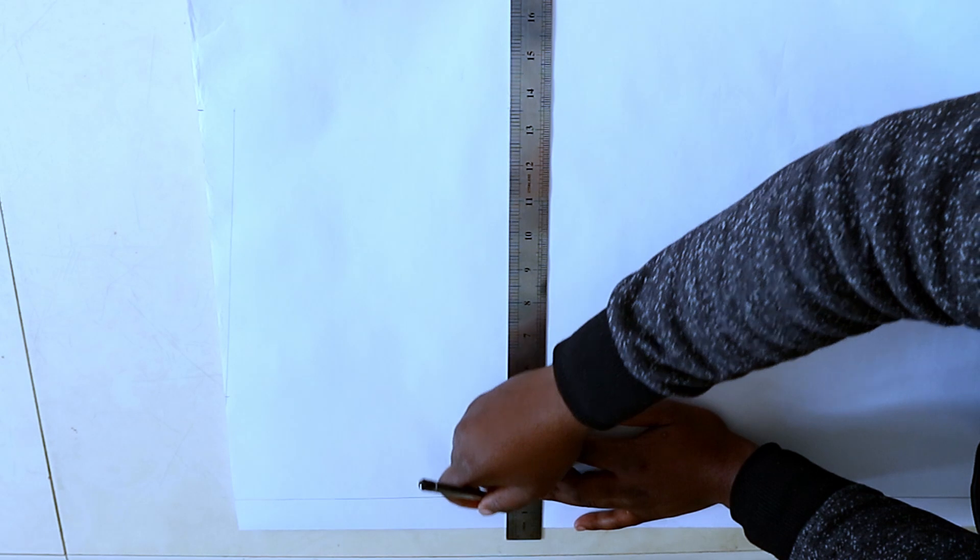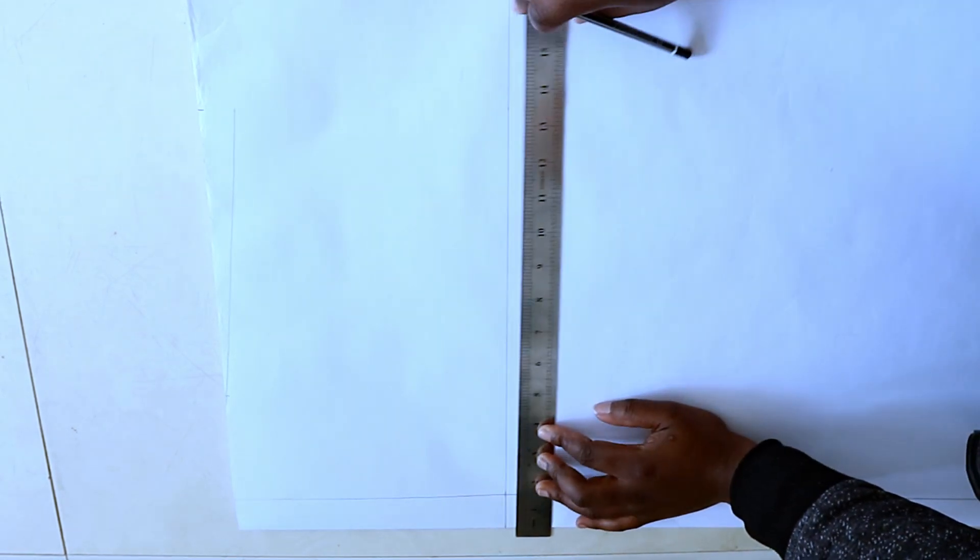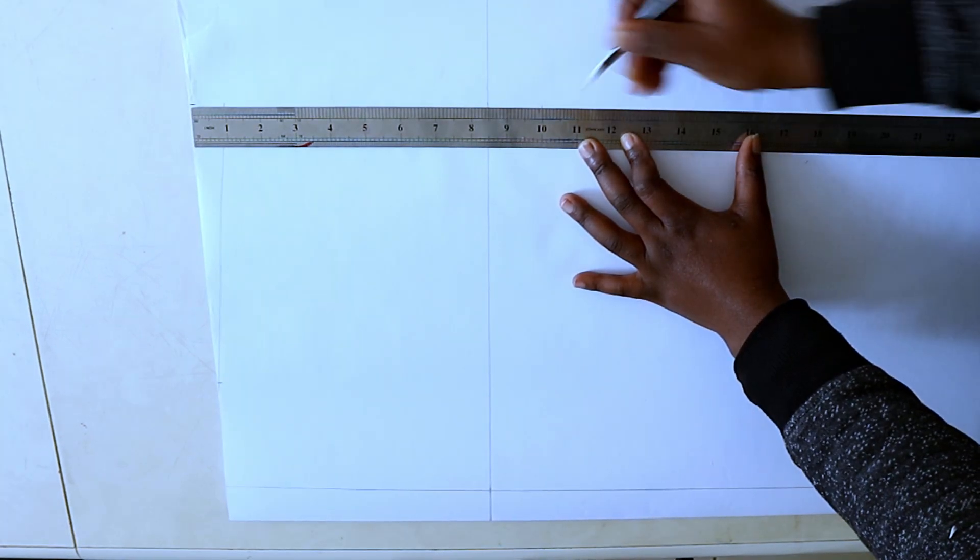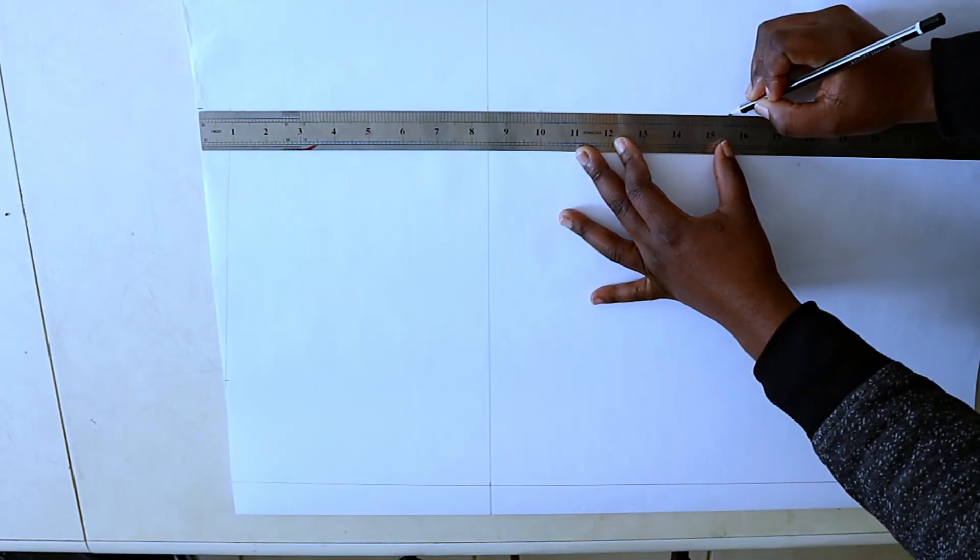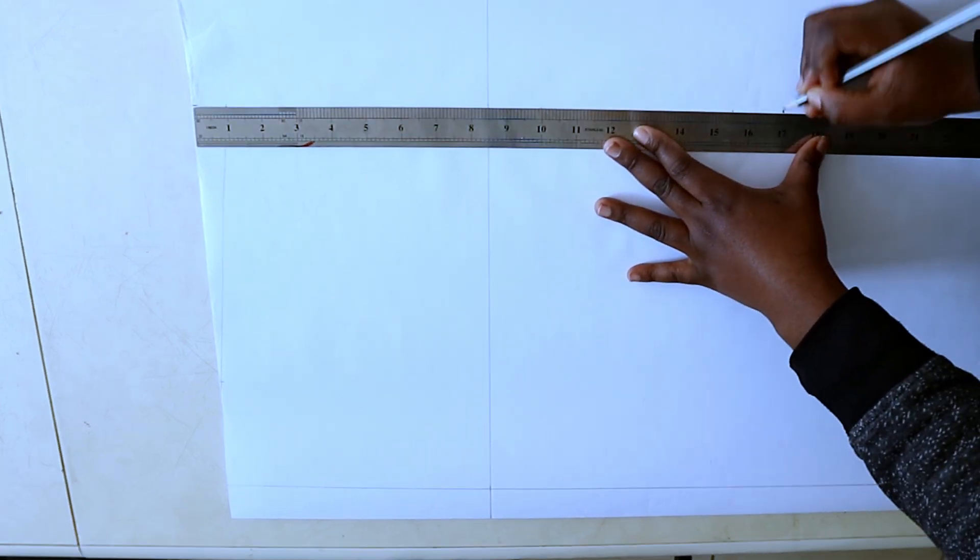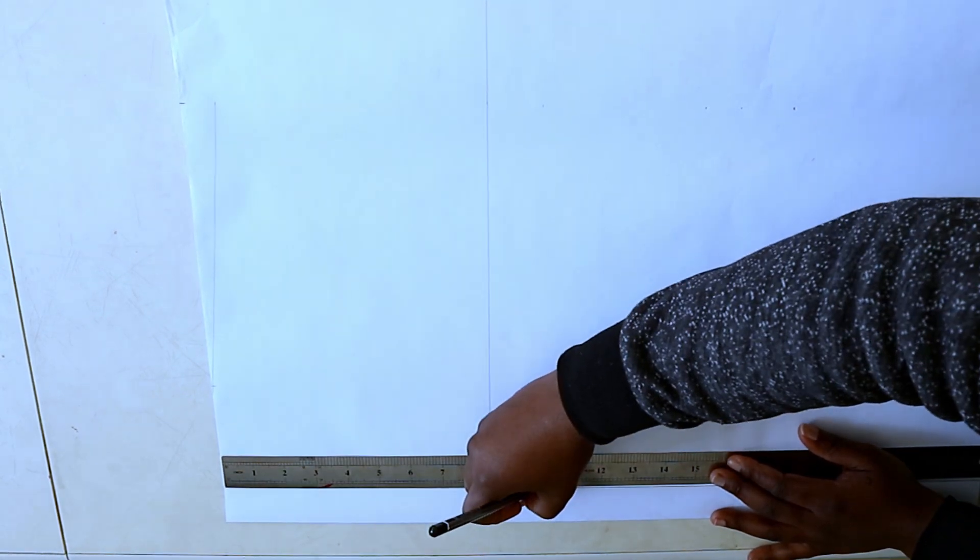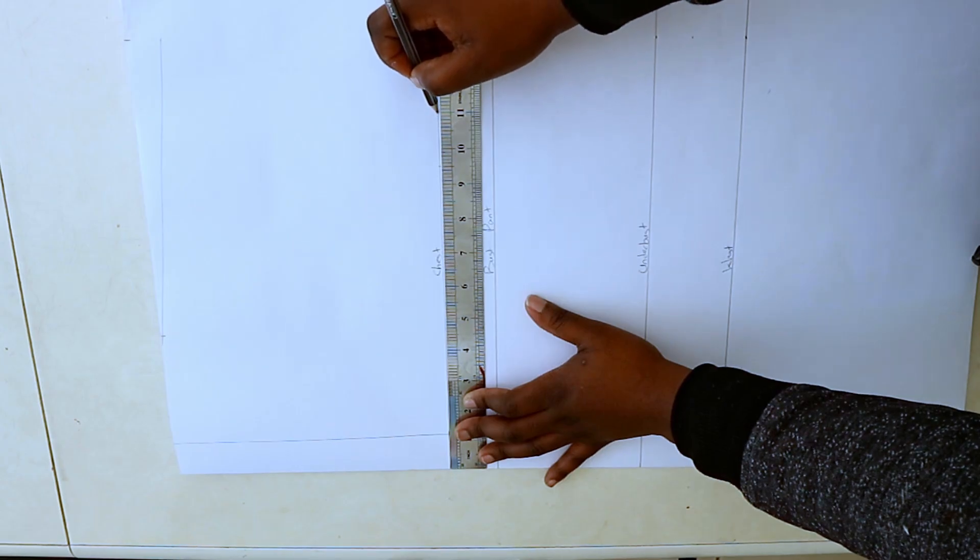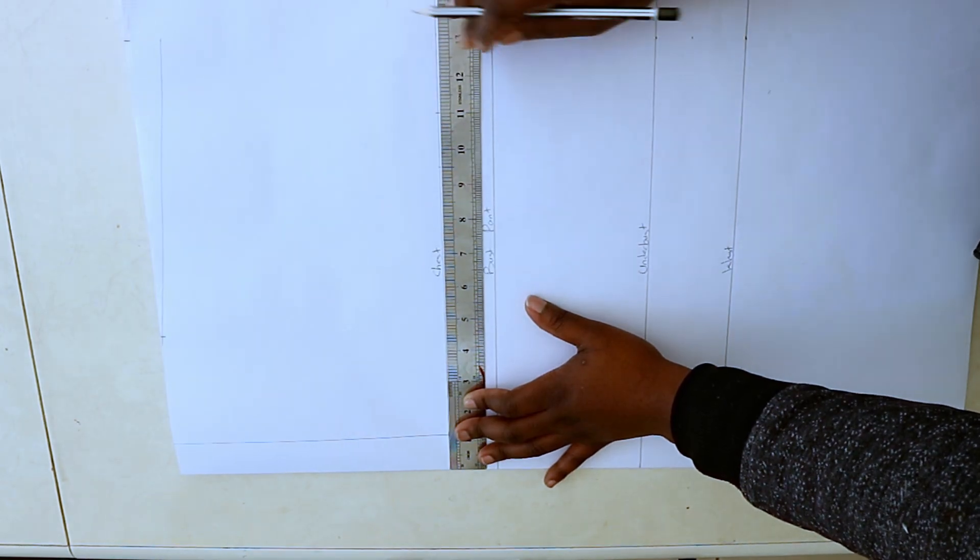On the top of the paper, which is my reference point, mark half of your armhole measurement on both sides and square across to create the chest line.